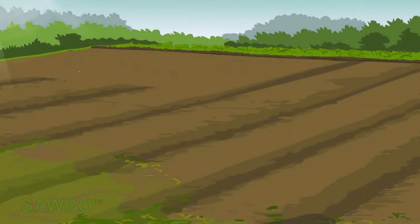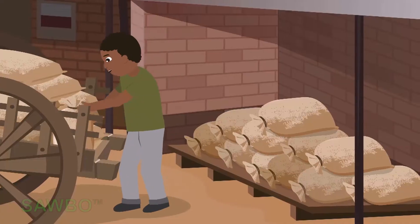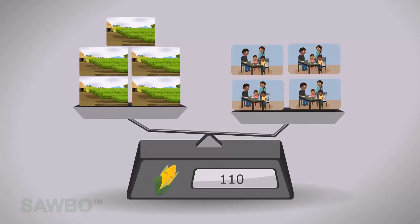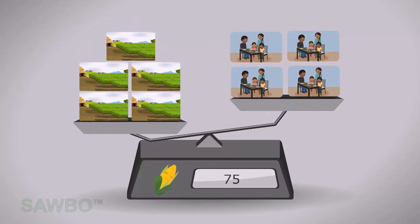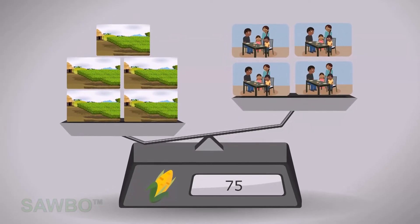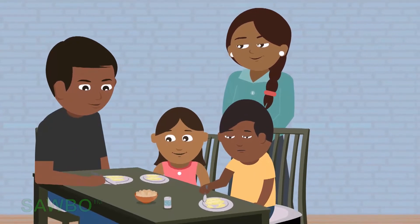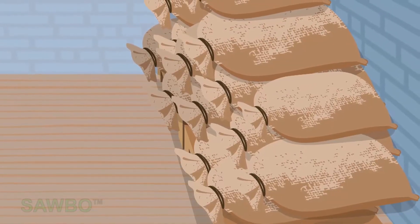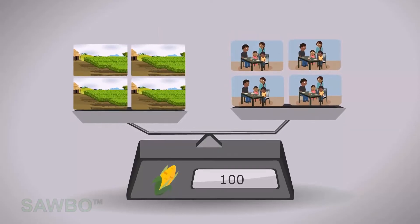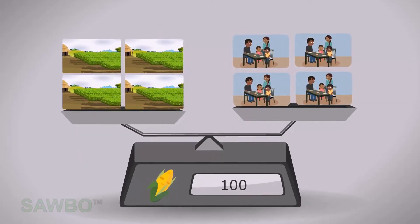As it rains, the farmers grow maize. When they harvest it, the price goes down to 75 units per bag because of an oversupply. People continue to eat the maize, which reduces the oversupply of the crop. As supply and demand become equal, the price goes back to 100 units per bag.